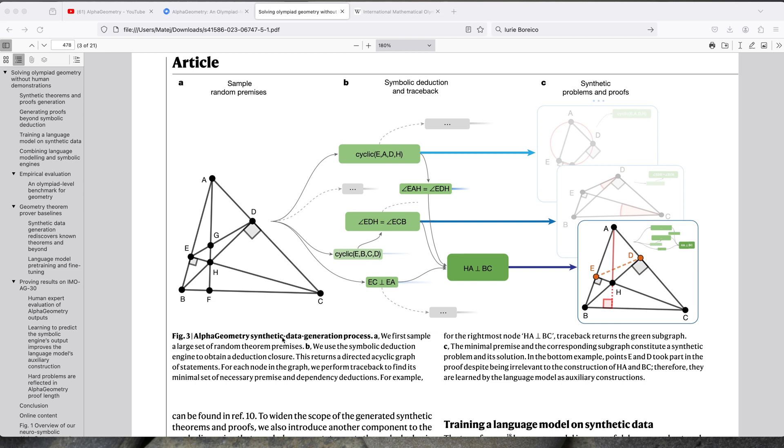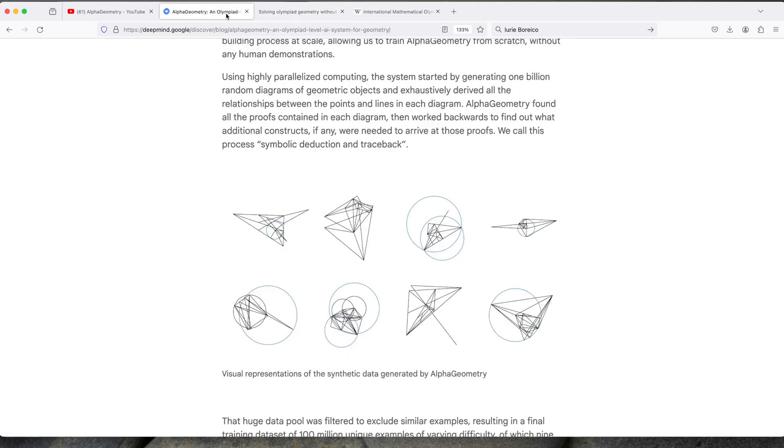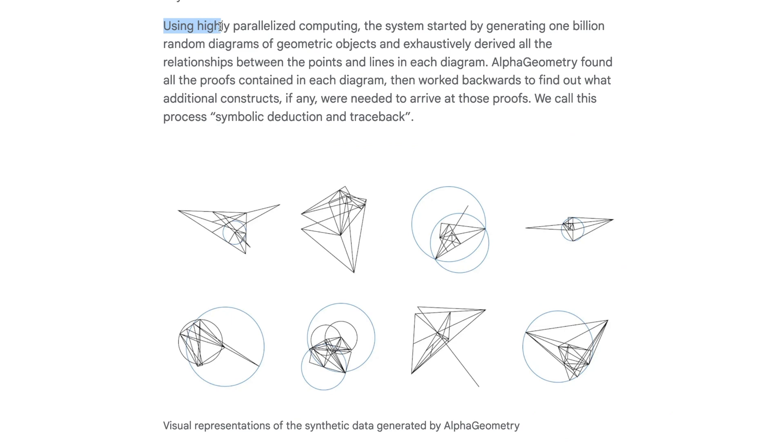So I'm familiar with the concept of synthetic data. A lot of times people generate synthetic data to augment their data set or to make it bigger. But in this case, they use 100% synthetic data. Figure 3 explains how they come up with the synthetic data, but I think it's easier to understand it how it's explained on the blog. So it says right here, using highly paralyzed computing, the system started by generating 1 billion random diagrams of geometric objects, and exhaustively derived all the relationships between the points and lines in each diagram.